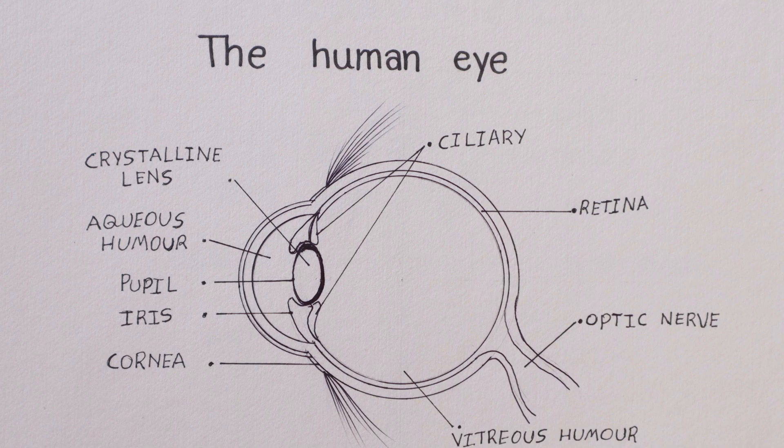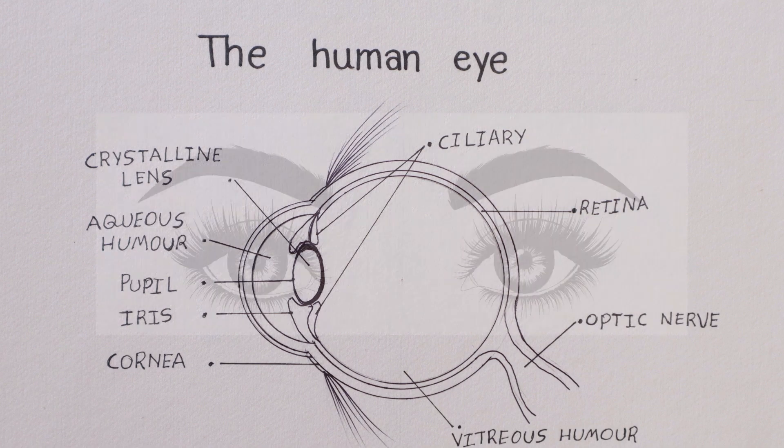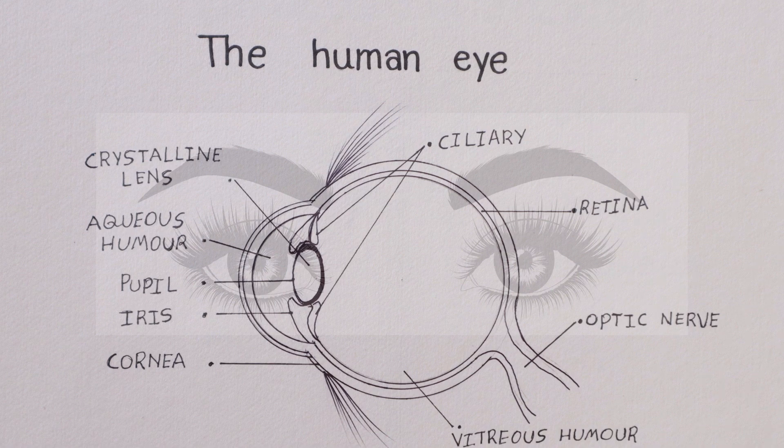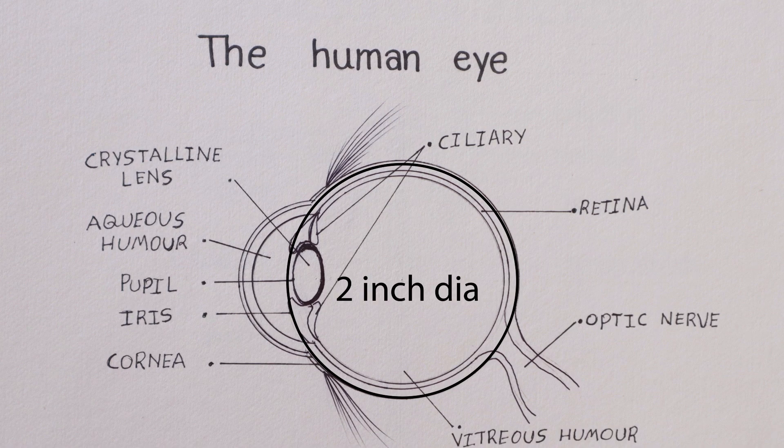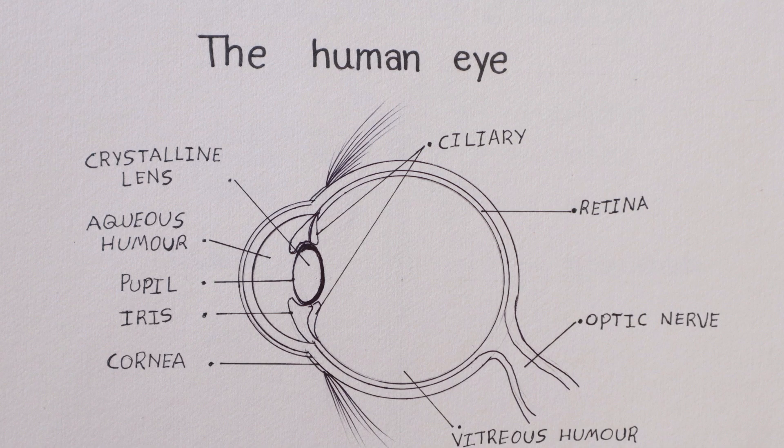So before we draw, we need to make out in which angle does the eye exist. Do think and observe. The eye is in circle shape. Right students? Very good. If you can understand how the eye is created, then you can draw it easily.